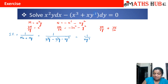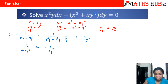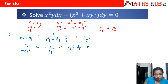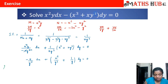Now let us multiply the entire equation by the integrating factor -1/(xy³). Multiplying M = x²y by -1/(xy³) gives -x/y² dx. Multiplying N = -x³ - xy² by -1/(xy³) gives (x²/y³ + 1/y) dy. So the equation becomes: -x/y² dx + (x²/y³ + 1/y) dy = 0. This equation was not exact before, but now it is an exact differential equation.